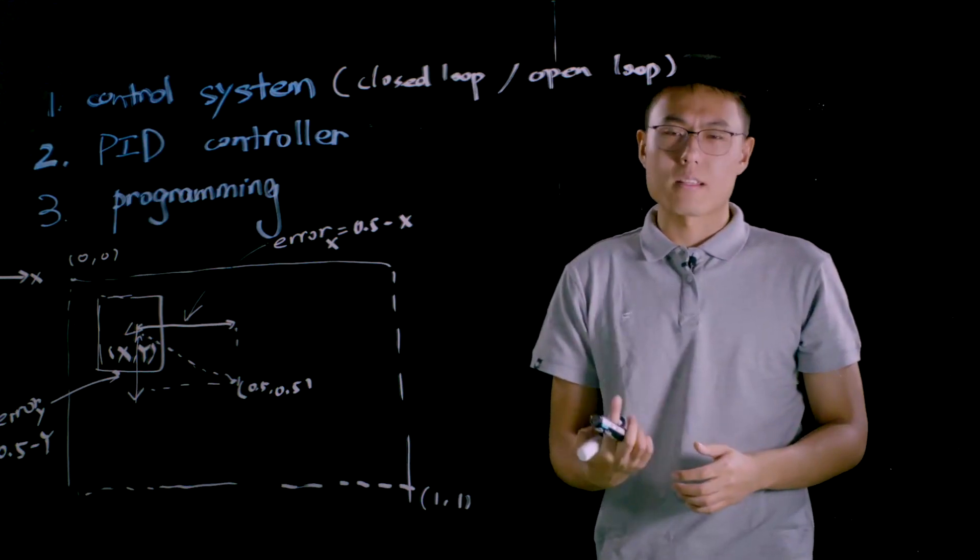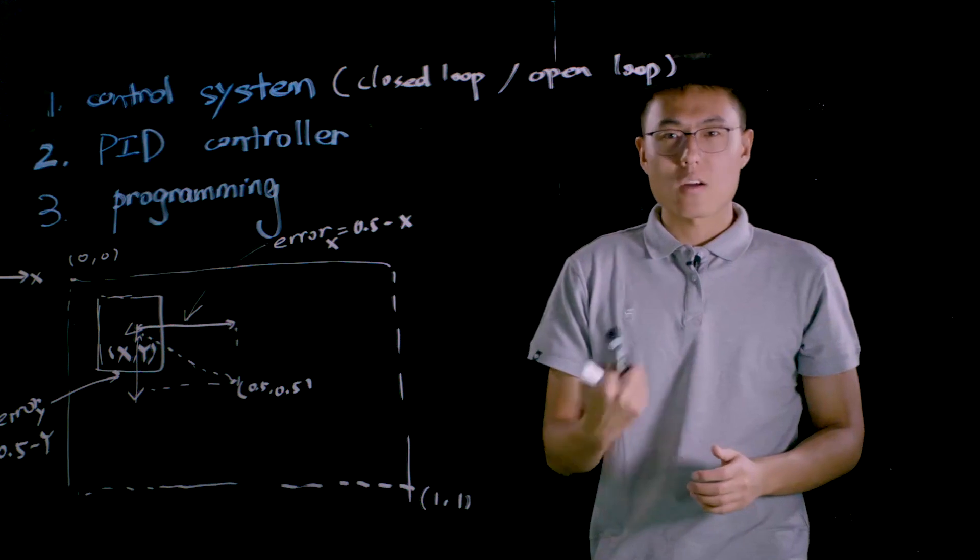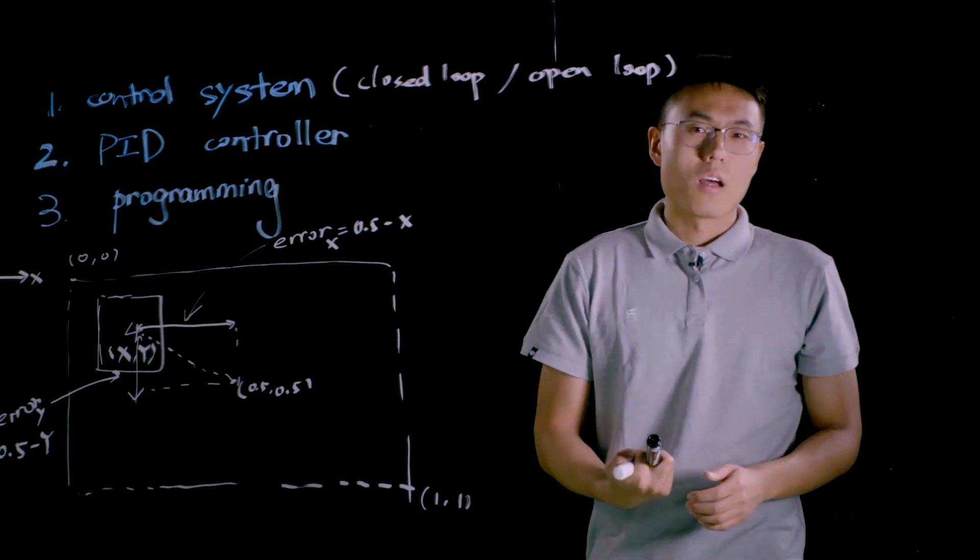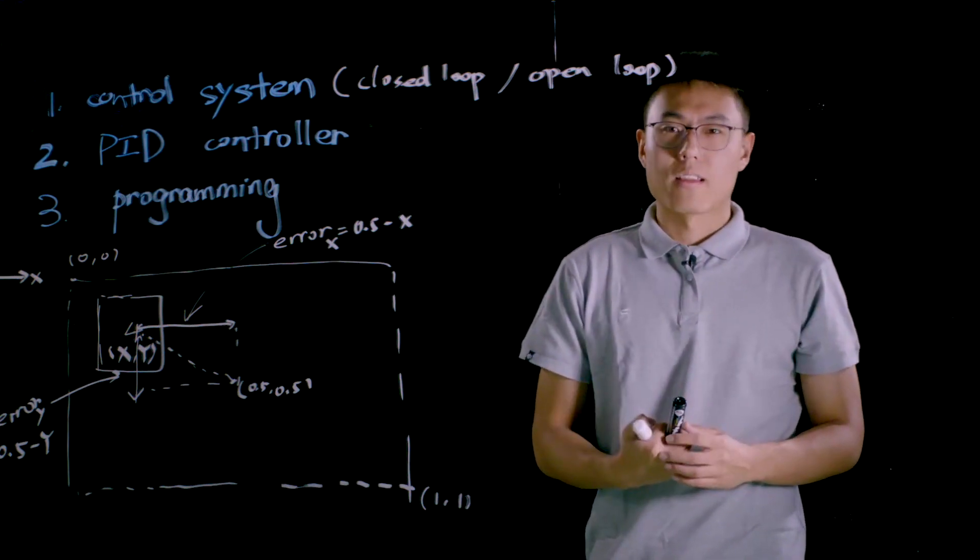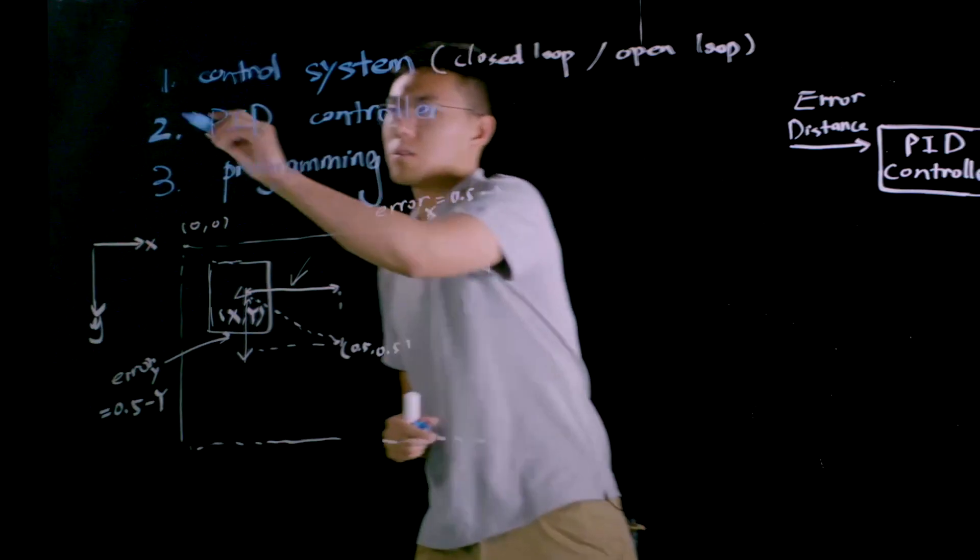As long as the output value deviates from the desired value, a corresponding control variable will be generated to eliminate the error. Now we understand what the control system is.